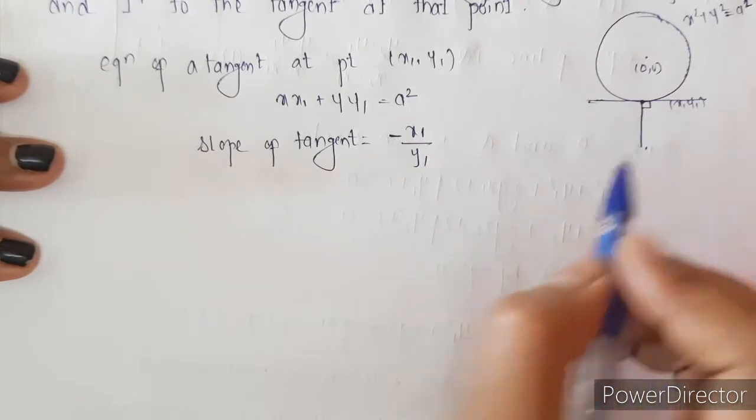Since the normal is perpendicular to the tangent, the slope of the tangent multiplied by the slope of the normal equals minus 1. The slope of the tangent is minus x1 upon y1, so multiplying by the slope of the normal gives minus 1. Therefore, the slope of the normal is y1 upon x1.